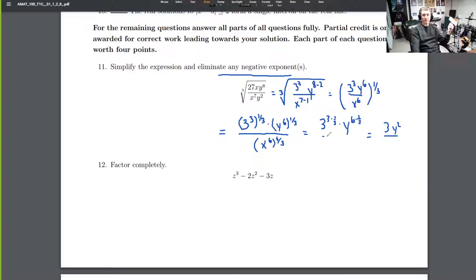And then in the denominator, we have x to the 6th times 1/3, which is 2 again. So this is the correct solution with every single step.